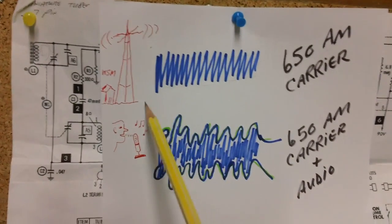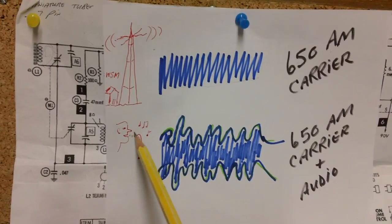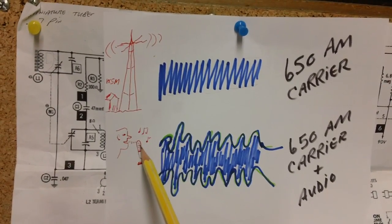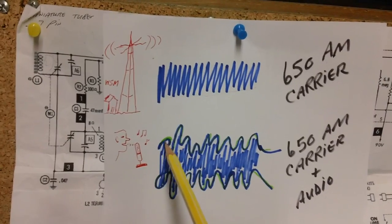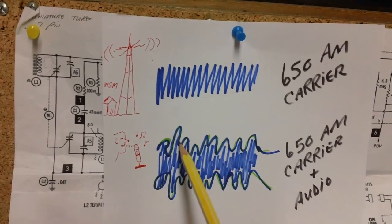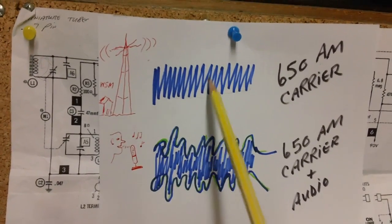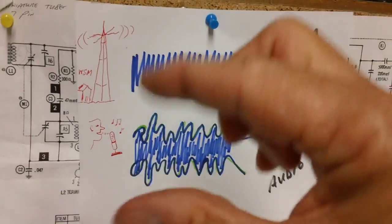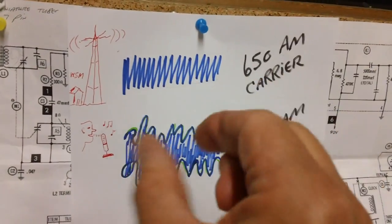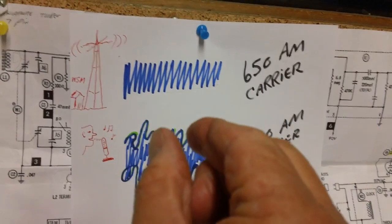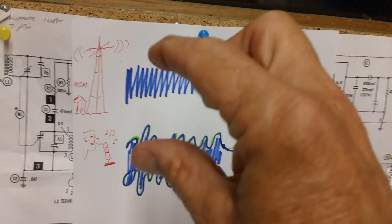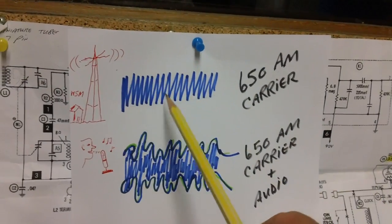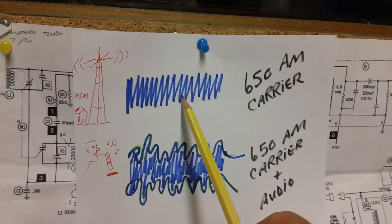The singer, the musician, or whoever is talking begins to talk into the microphone, and his voice or audio is being laid on top of that RF. It shapes that RF — every time his voice goes up and down and the frequencies change, every time he talks, it shapes that radio frequency at 650 kilocycles.